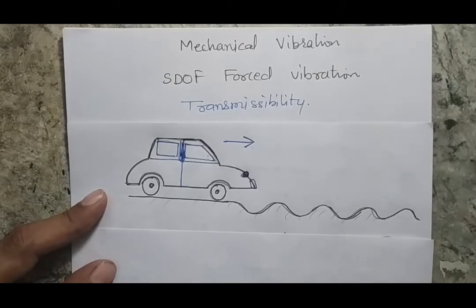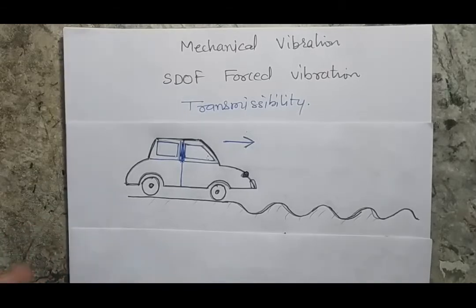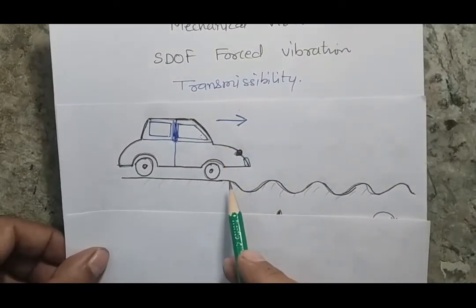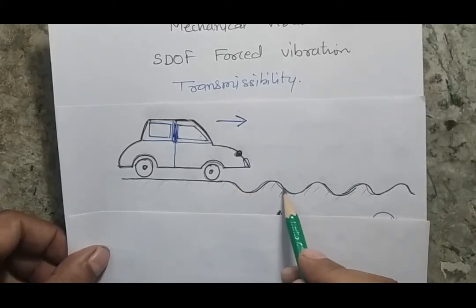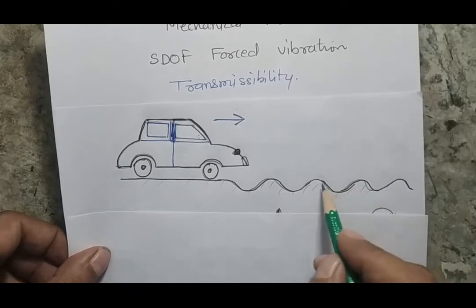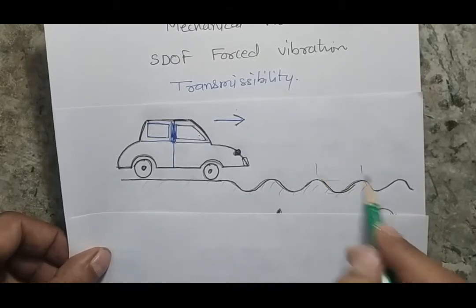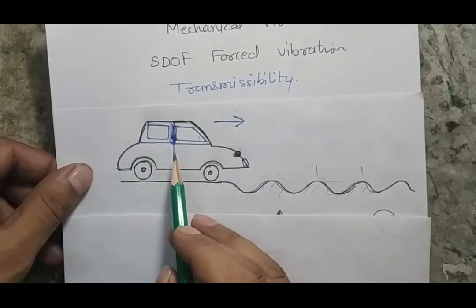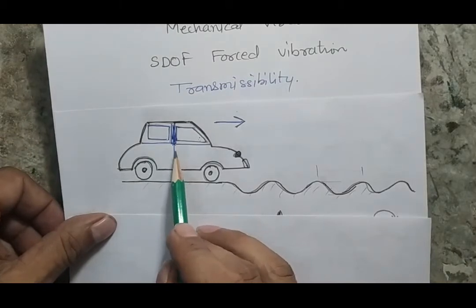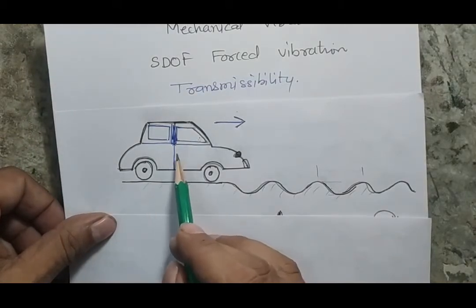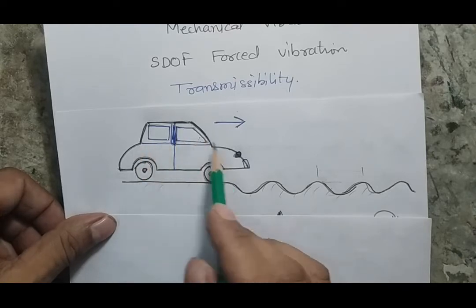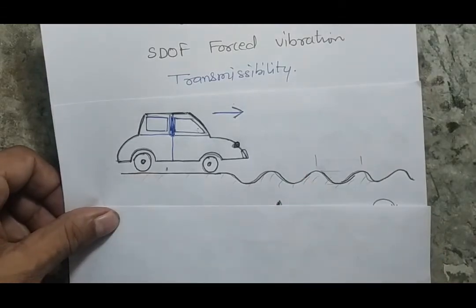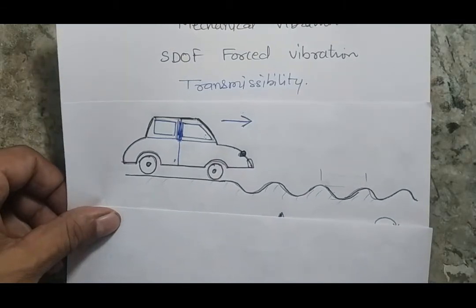In this session we are going to focus on a real life problem. Suppose there is a car moving in a direction and ahead the road profile is a wavy profile having a certain known height as well as a known wavelength. We can make a mathematical model of this car by replacing the car body with a single mass, and the tire and suspension can be considered as the spring and damper.